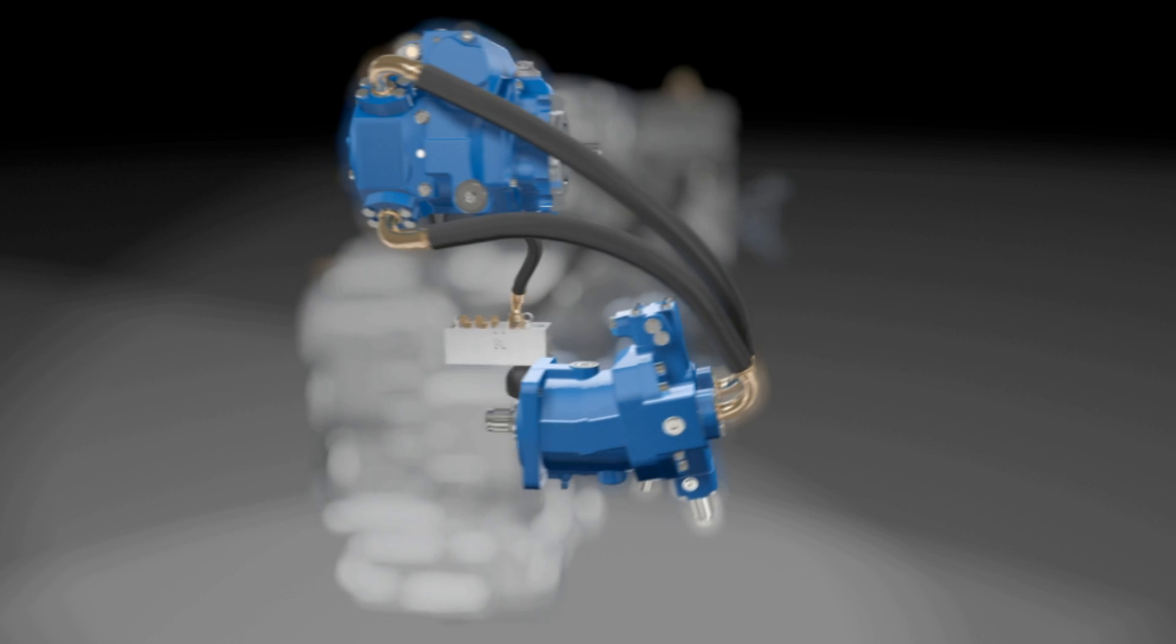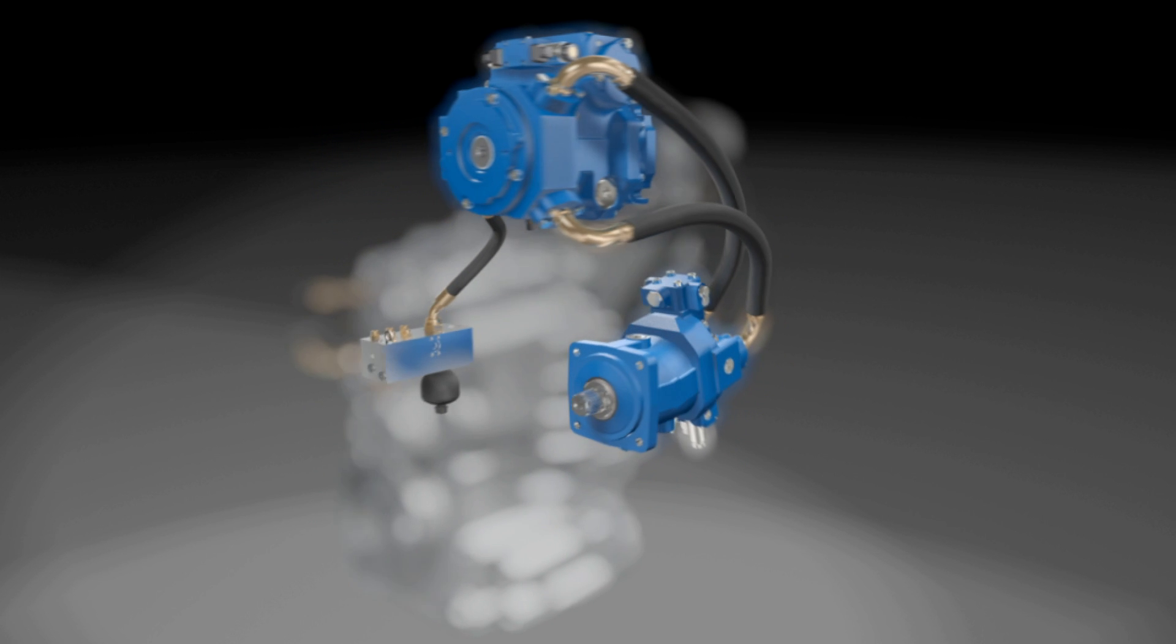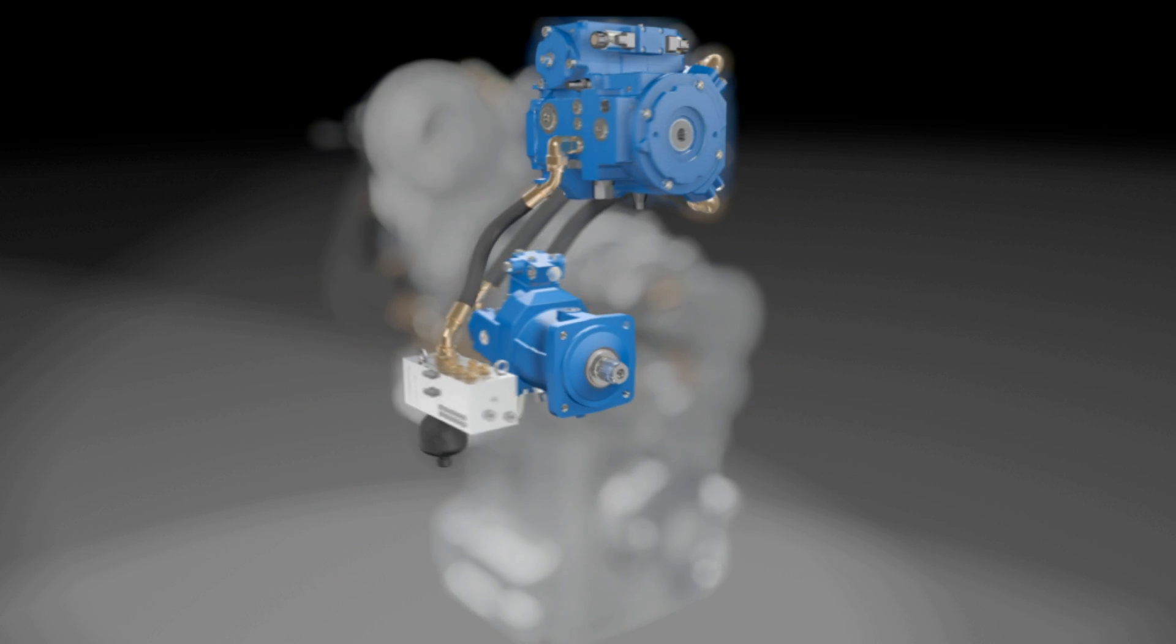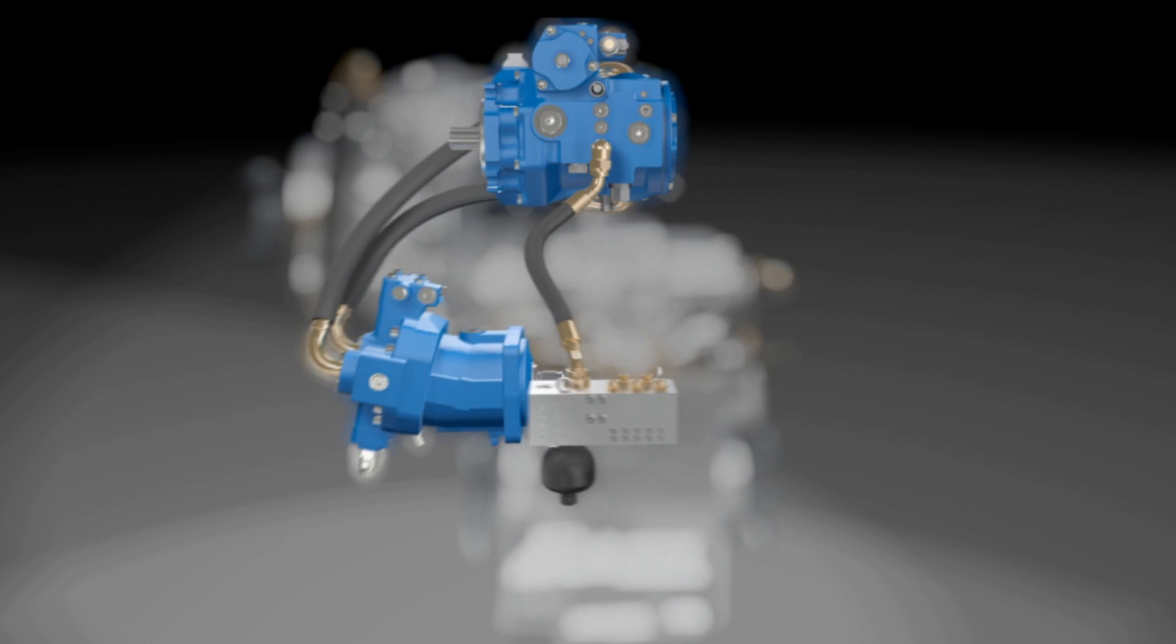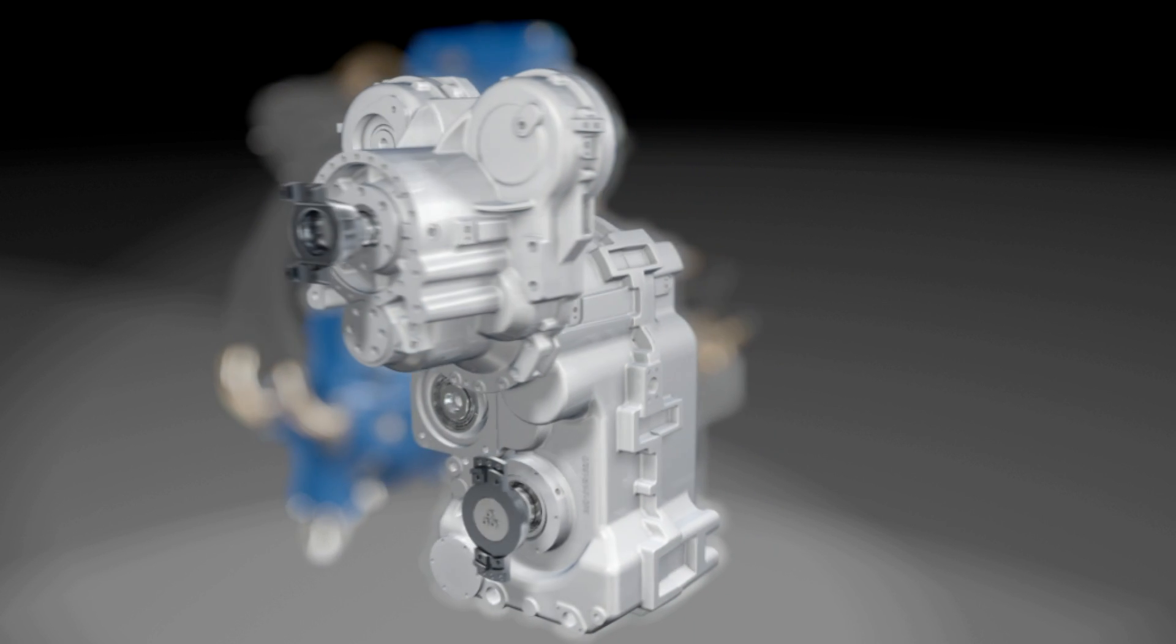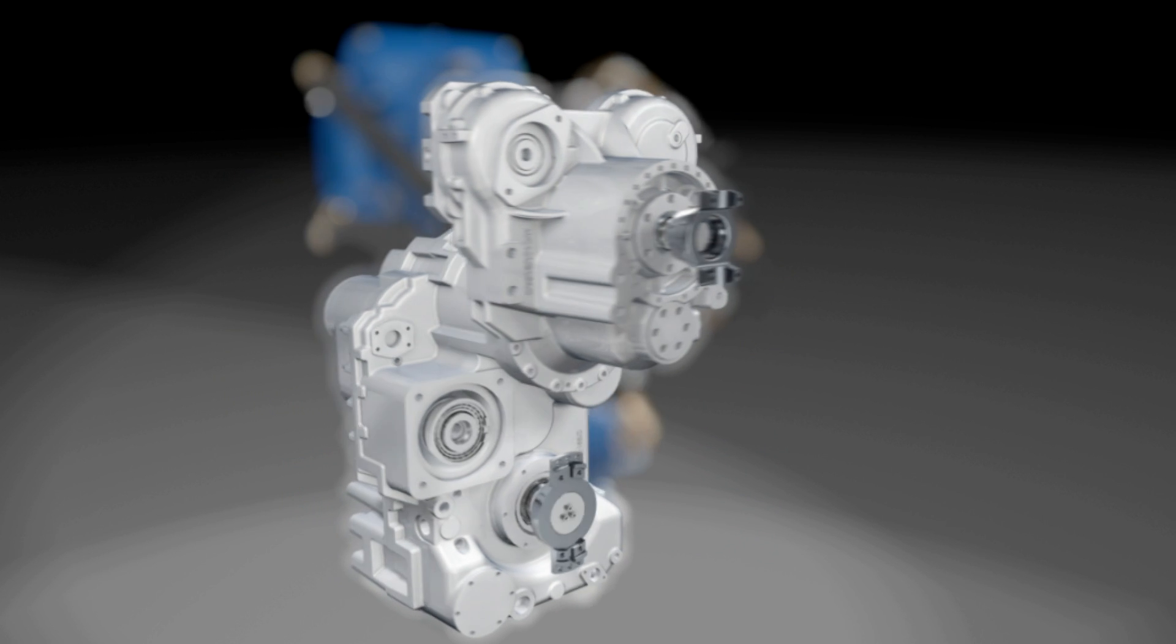The hydraulic part of the HVT consists of an A4VG variable pump and an A6VM variable motor as well as a valve block for the coupling control. The mechanical part of the HVT has an input shaft from the engine.